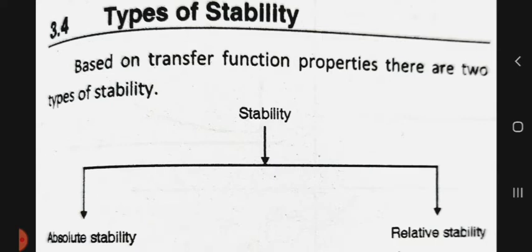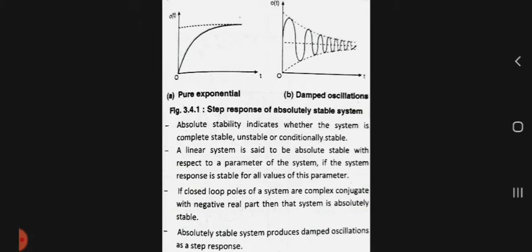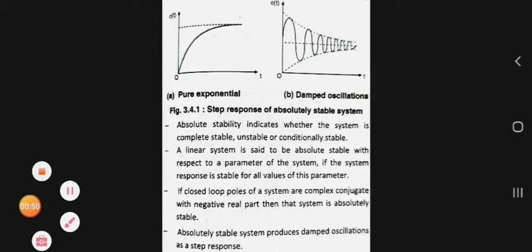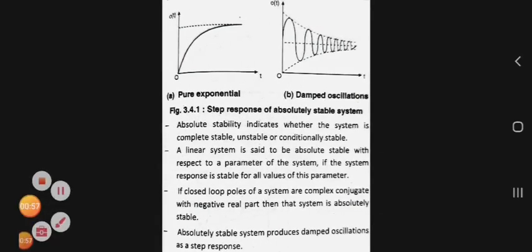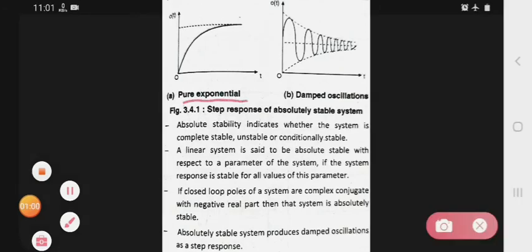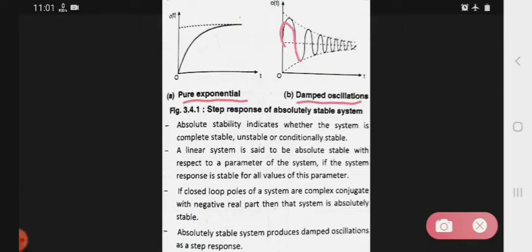The first type is the absolute stable system, that is absolute stability. The first point shows a pure exponential response and a damped oscillation. This is the step response of an absolutely stable system.